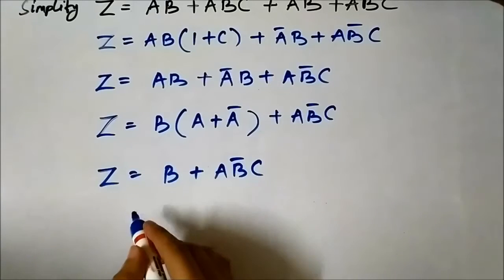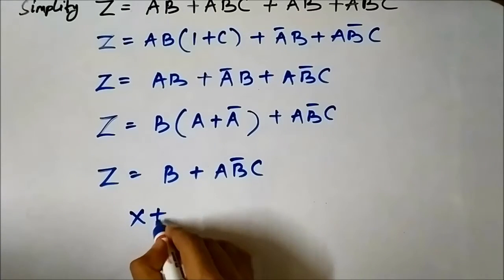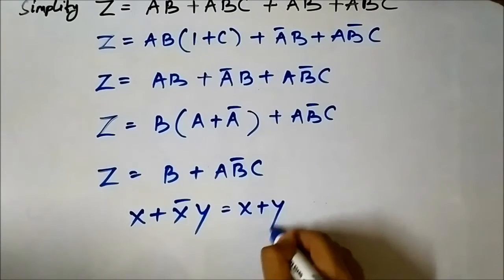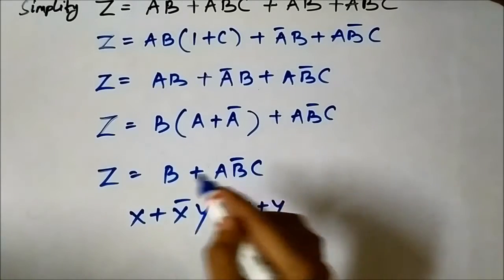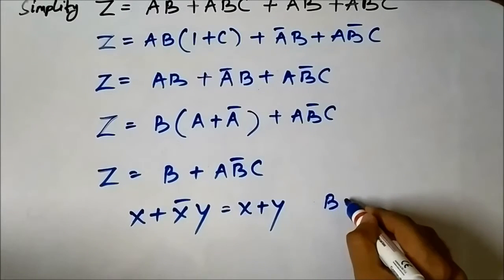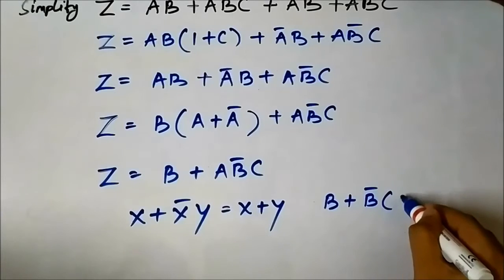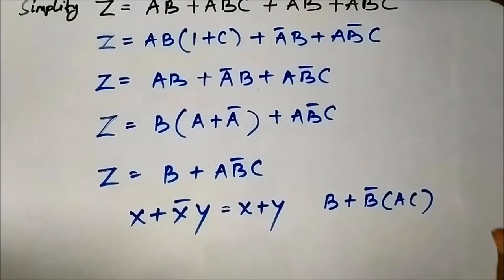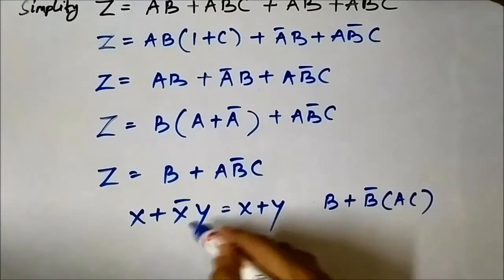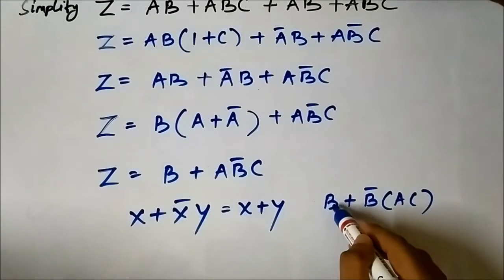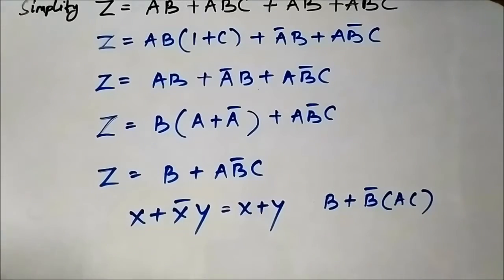Now we apply the absorption rule, which states that x + x̄y = x + y. Here we have b + b̄·(ac), where ac is treated as a single boolean variable y. Correlating with the rule: x = b, x̄ = b̄, y = ac. Applying the rule gives b + ac.